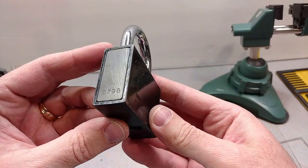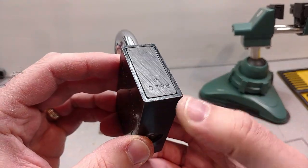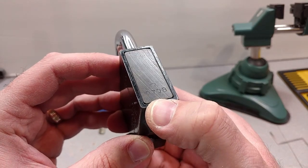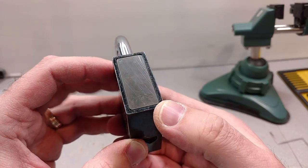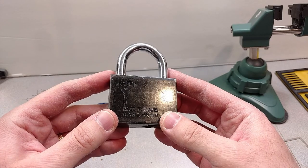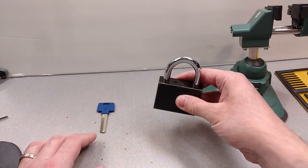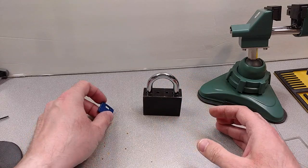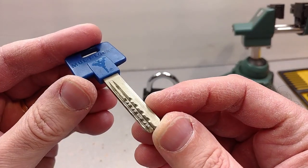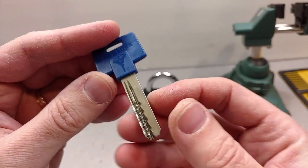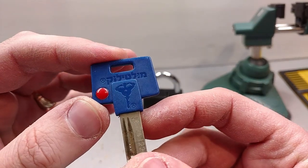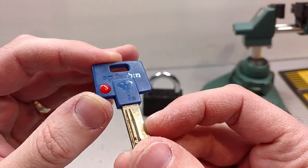Not exactly sure when it was manufactured, but you can see the code here 0798. I wasn't able to find information about that. Perhaps it's July of 1998. You can see your key here and Multilock in Hebrew on the key.